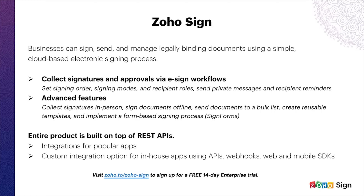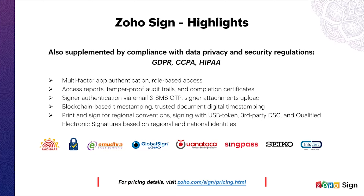If you are new to Zoho Sign, you can click the link below to sign up for a free 14-day enterprise trial which will give you sufficient time to explore the app completely. Zoho Sign offers multi-factor authentication, tamper-proof audit trails, blockchain timestamping and certificate of completion. Along with this, Zoho Sign also offers signer identity verification, trusted document timestamping, and collecting signatures via SMS securely.